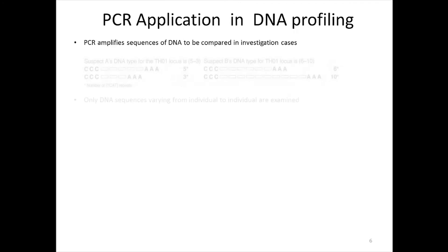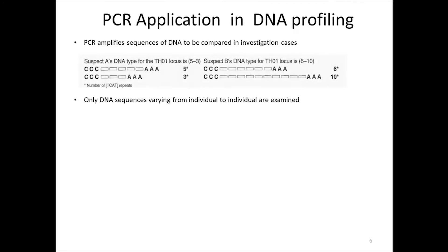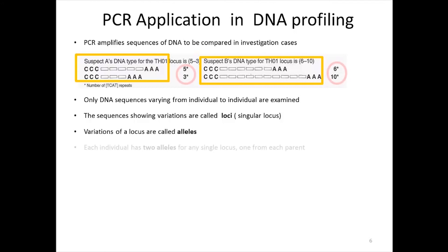Scientists only examine a small percentage of DNA because all individuals share most of the human genome. The sequences showing variation are called loci, while each variation of a locus is called an allele. Each individual has two alleles for any single locus, one inherited from the mother and one from the father.